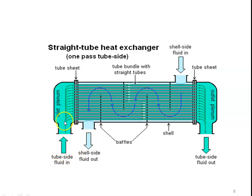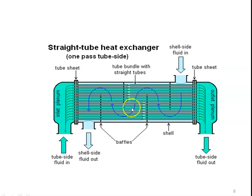The tube-side fluid enters and flows through the green-colored tubes from left to right, collects on the right side, and flows to the other connection. The shell-side fluid enters and the blue color line indicates its flow path. There are baffle plates whose purpose is to deflect the fluid so that the hot fluid is retained inside the heat exchanger for a longer time, increasing the length of the heat transfer path for more heat transfer between the hot and cold fluid.